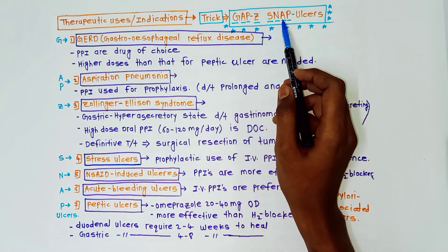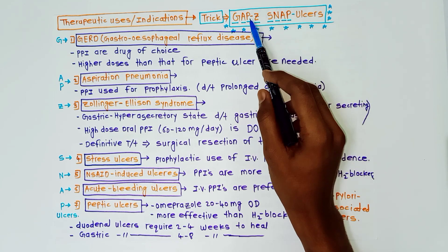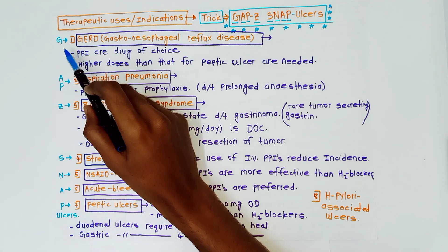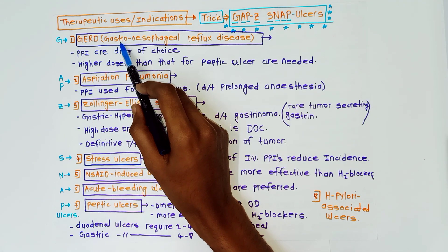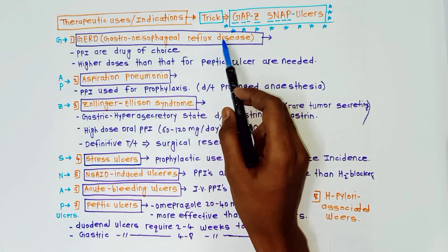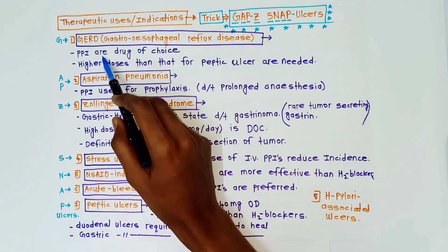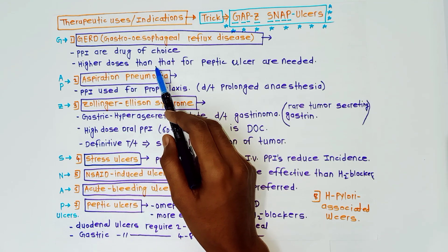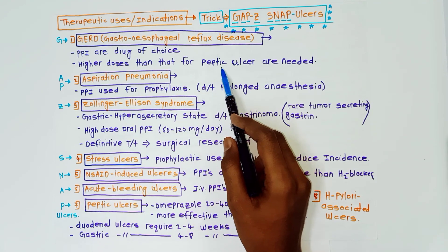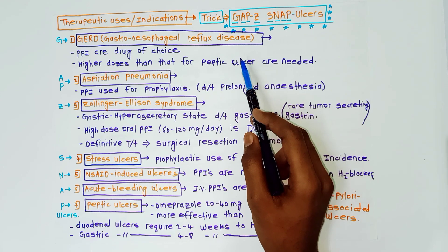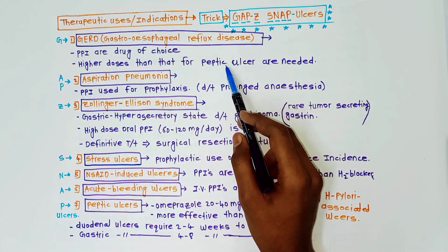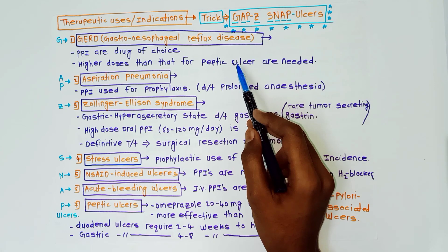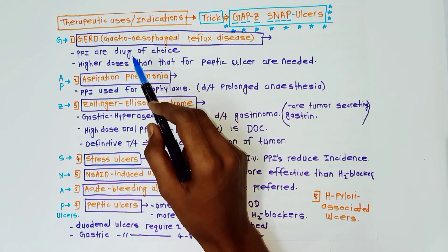In the mnemonic 'GAP Z SNAP ulcers': G stands for GERD — gastroesophageal reflux disease. Proton pump inhibitors are the drug of choice in this case, and higher doses are required than those used for peptic ulcer.